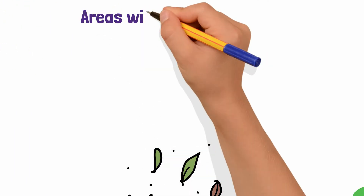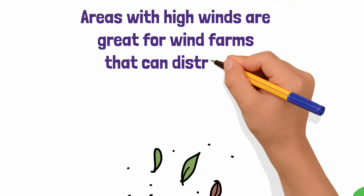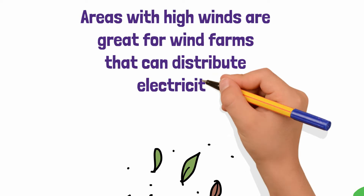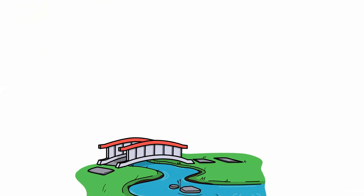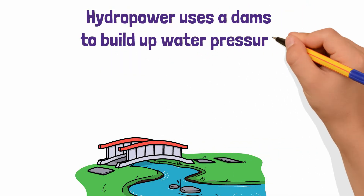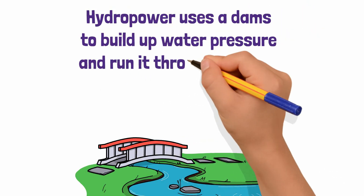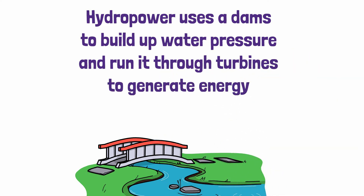Areas with high wind are great for groups of windmills called wind farms, which send energy to transmission stations to be distributed as electricity to homes and businesses. Hydropower works much the same way, usually using a dam to build up water pressure and run it through turbines to generate energy that is also sent to the transmission stations.